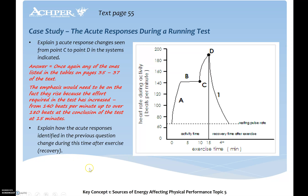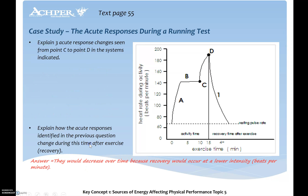Explain the acute responses during the time after exercise — they would decrease over time because recovery would occur. Heart rate would lower, breathing rate would lower, stroke volume would lower, and cardiac output would lower during that stage.